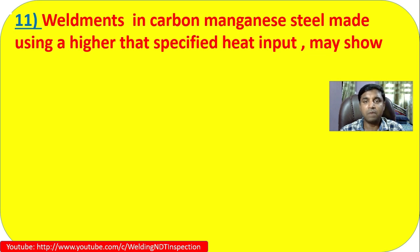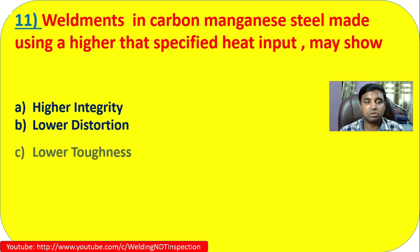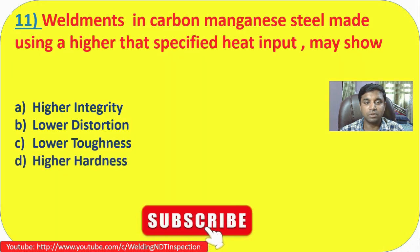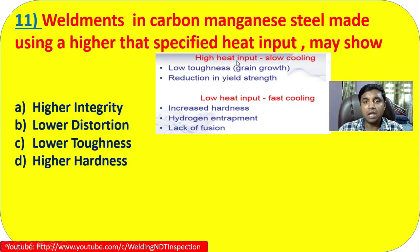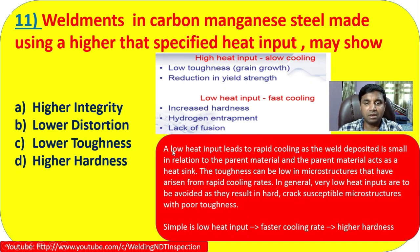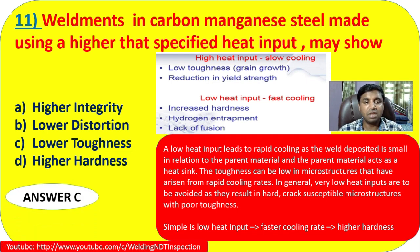Question 11: Weldments in carbon manganese steel made using a higher than specified heat input — what will result? Options: A) higher integrity, B) lower distortion, C) low toughness, D) higher hardness. High heat input causes slow cooling, which leads to lower toughness. Conversely, low heat input causes fast cooling, leading to increased hardness, hydrogen entrapment, and lack of fusion. So the correct answer is C — lower toughness. This 11th question is very important.